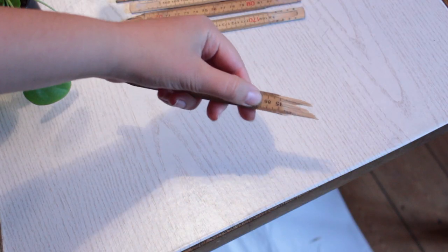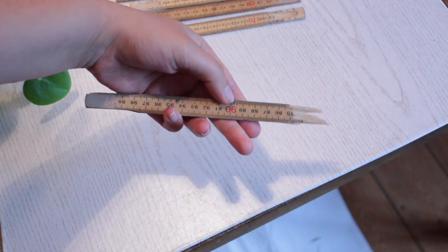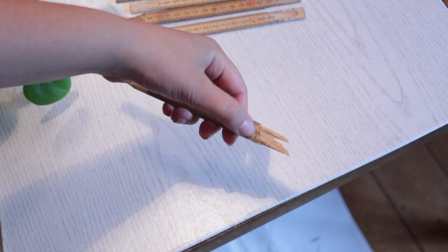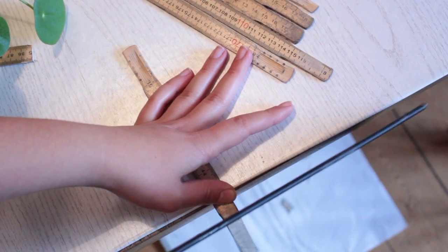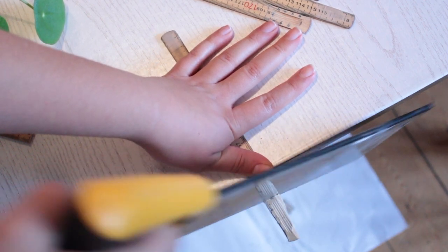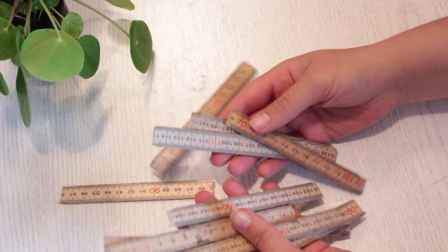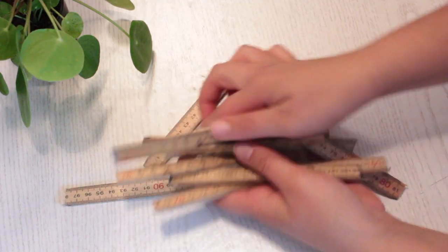Now the end of these sticks has to get sawn off because they aren't really usable. So just saw up to the nearest and most visible millimeter and continue doing this with all of the sticks. Then you should be left with these sticks with whole ends.